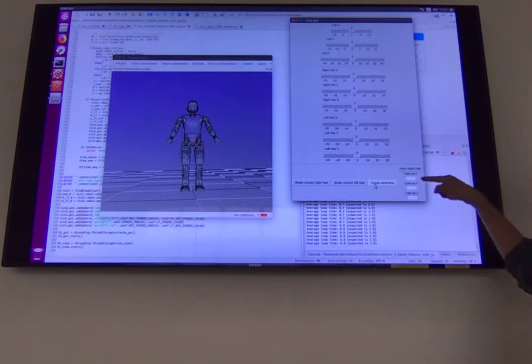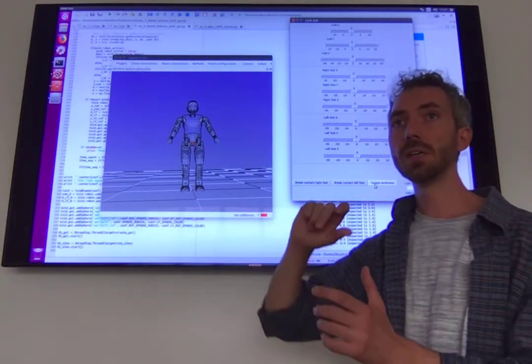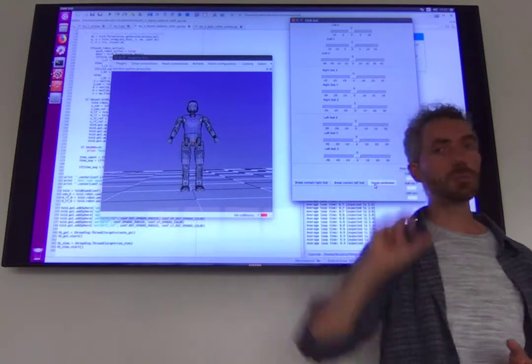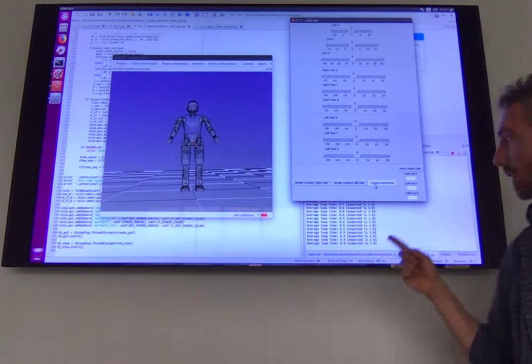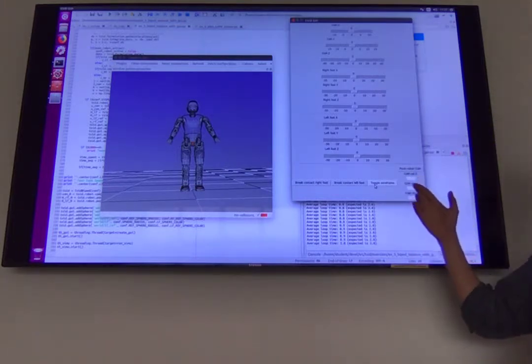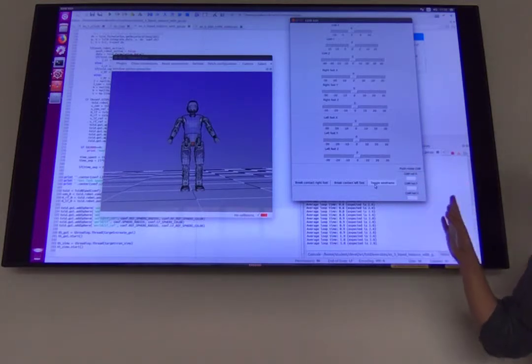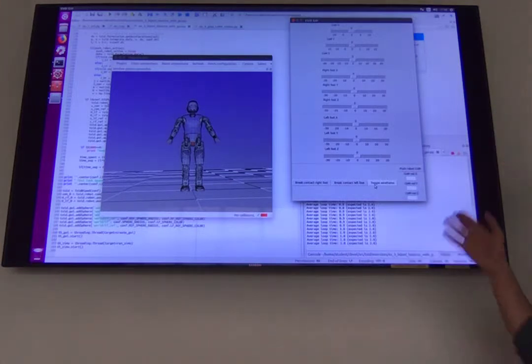And you have also three text boxes below it to specify the com velocity in the three directions. So here you're simulating a push to the robot by basically incrementing its center of mass velocity by a given delta, and you can specify the delta using the text boxes. So you should be careful to insert only numbers inside these boxes, because if you start adding something that is not a number, then probably you're going to break the script and you need to stop it and rerun it.